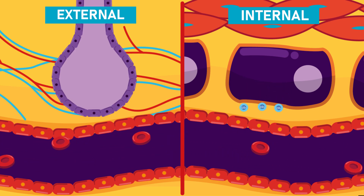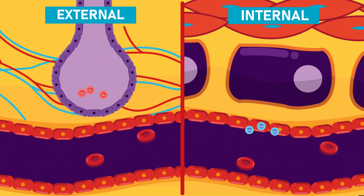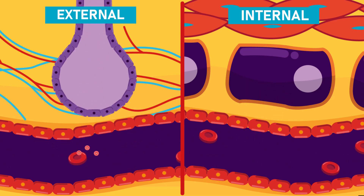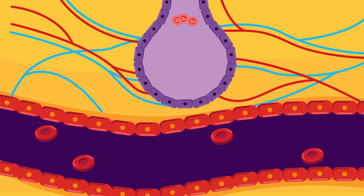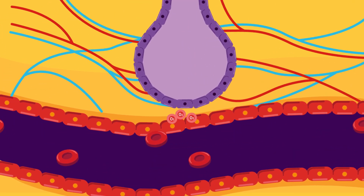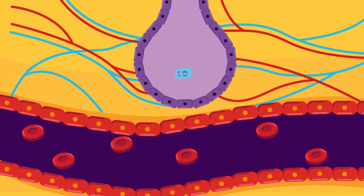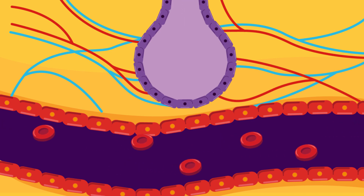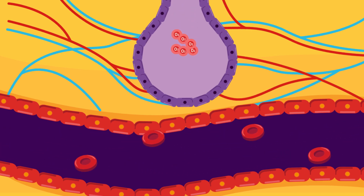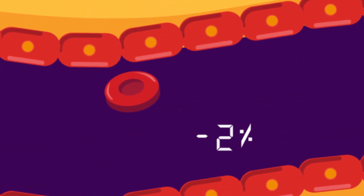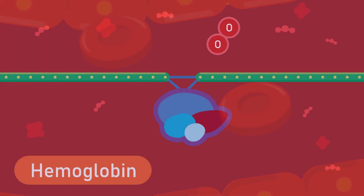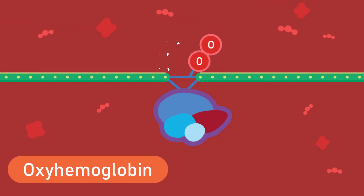However, the partial pressure gradient is the opposite of the gradient in the respiratory membrane. During inspiration, oxygen diffuses across the alveoli and enters into the bloodstream. Around 2% enters the plasma, and 98% combines with red blood cells to form oxyhemoglobin.